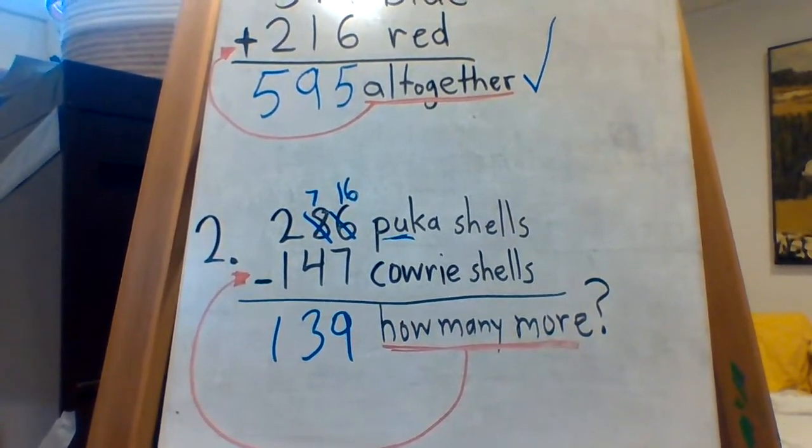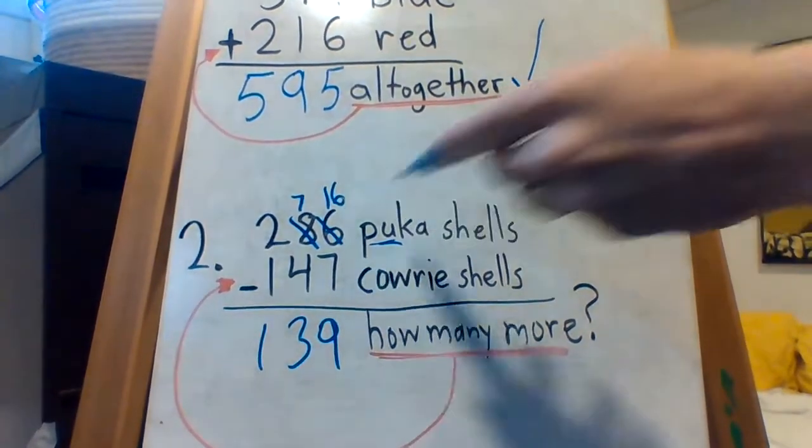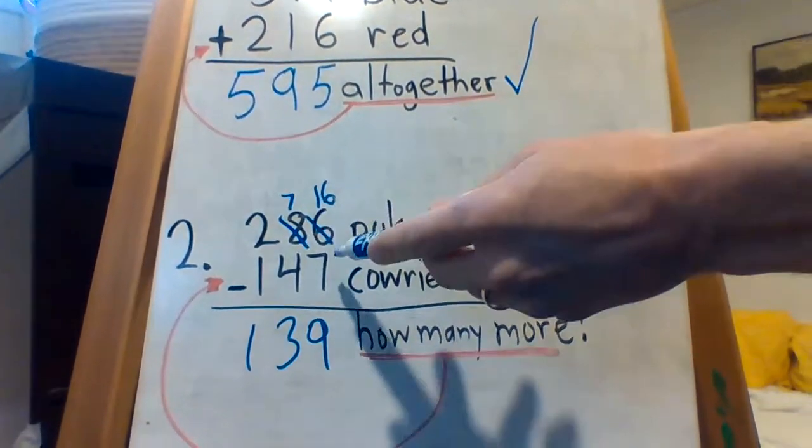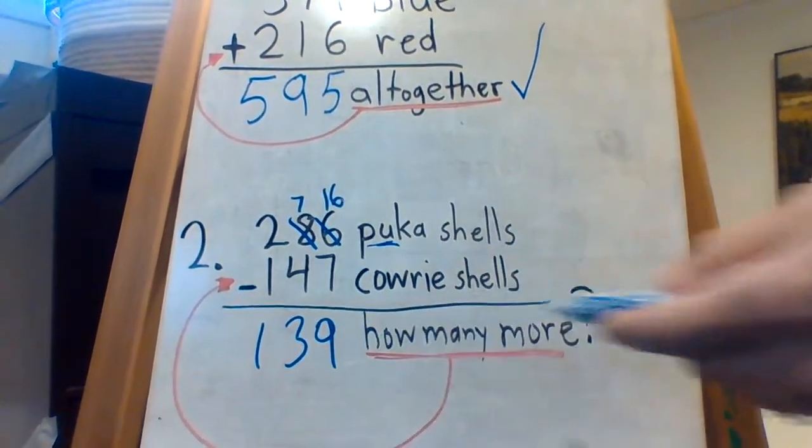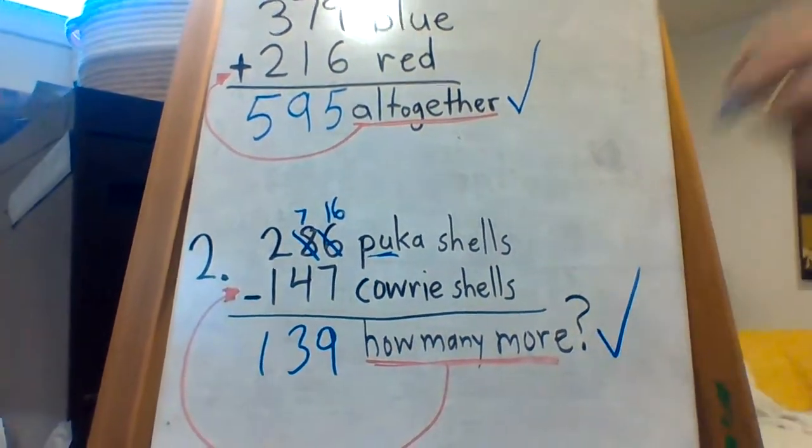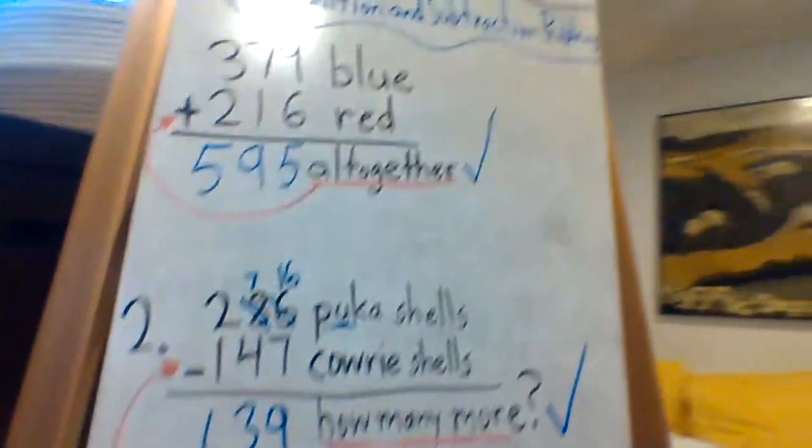Does that make sense? Well, we had almost 300 puka shells. About 150 cowrie shells. So that's about 150. Yeah. Looks like it's correct. There you go.